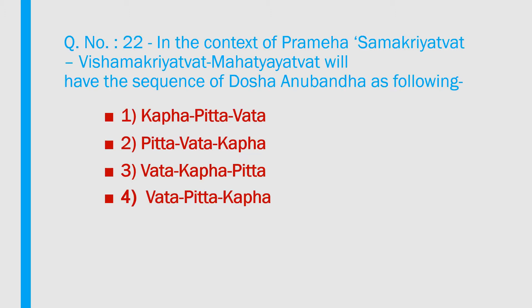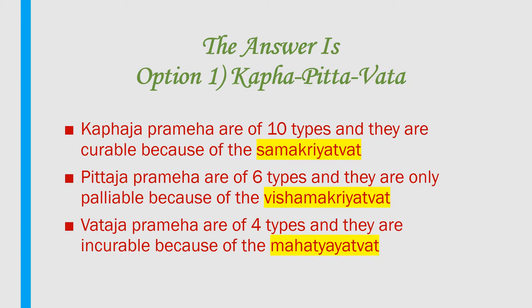Question number 22: In the context of prameha, samakriyatwath, vishamakriyatwath, and maha atiyatwa will have the sequence of dosha anubandha as: 1) Kappa, Pitta, Vada; 2) Pitta, Vada, Kappa; 3) Vada, Kappa, Pitta; 4) Vada, Pitta, Kappa. Answer is option 1 — Kappa, Pitta, Vada. Kappa ja prameha is of 10 types and curable because of samakriyatwa. Pitta ja prameha is of six types and only manageable because of vishamakriyatwa. Vada ja prameha is of four types and incurable because of maha atiyatwa.